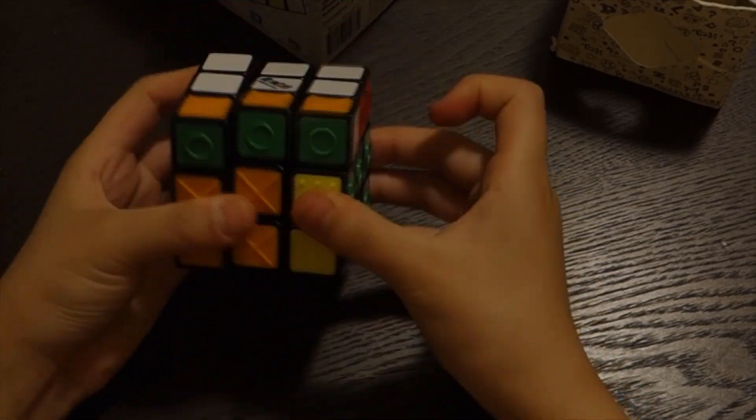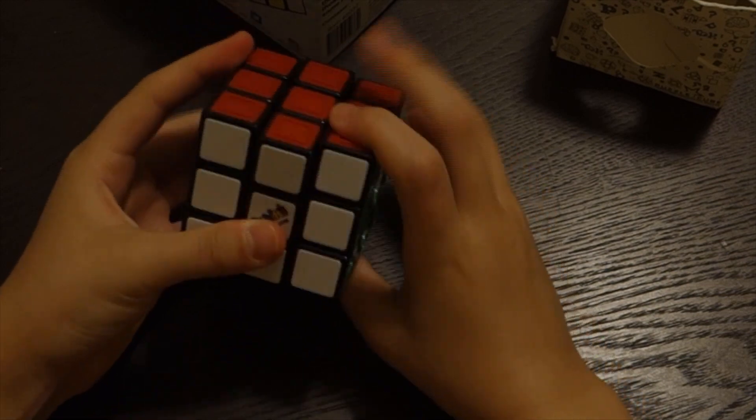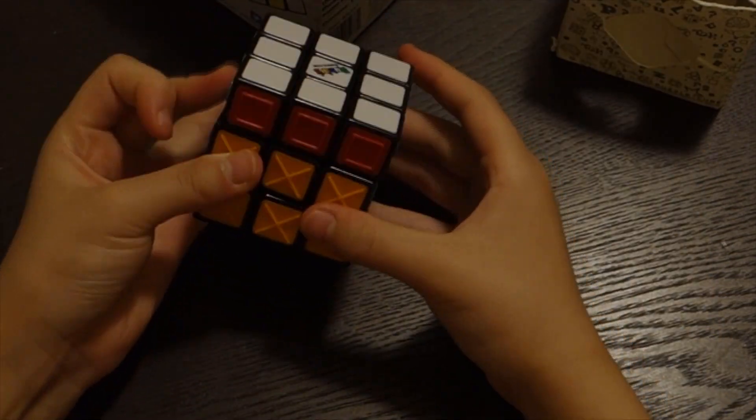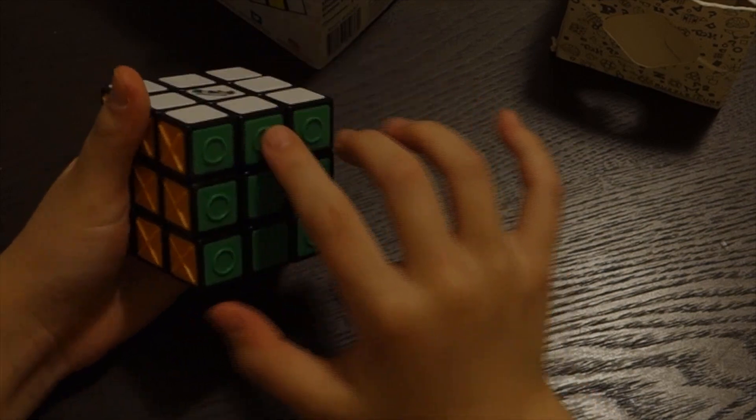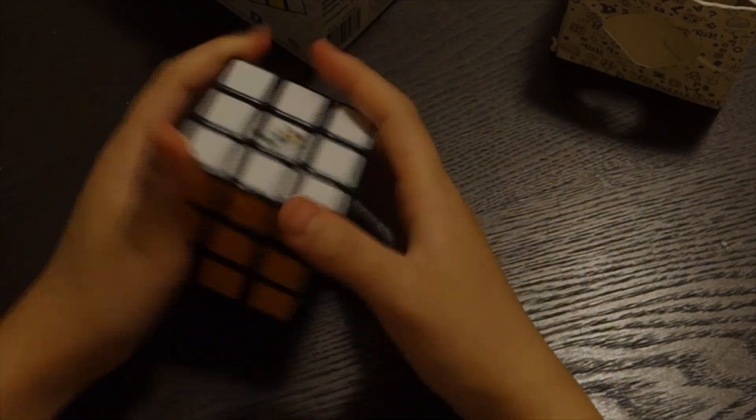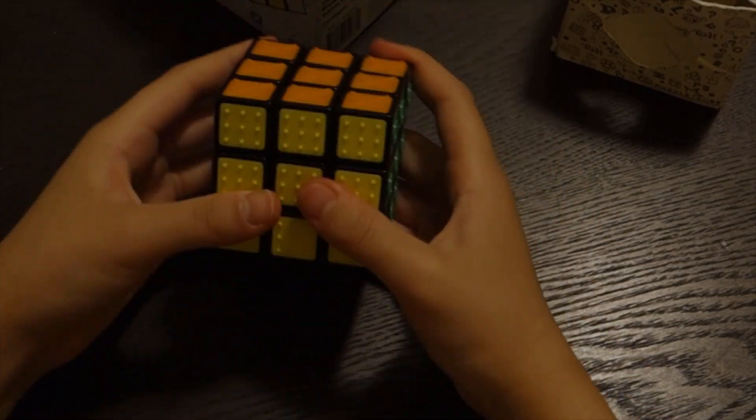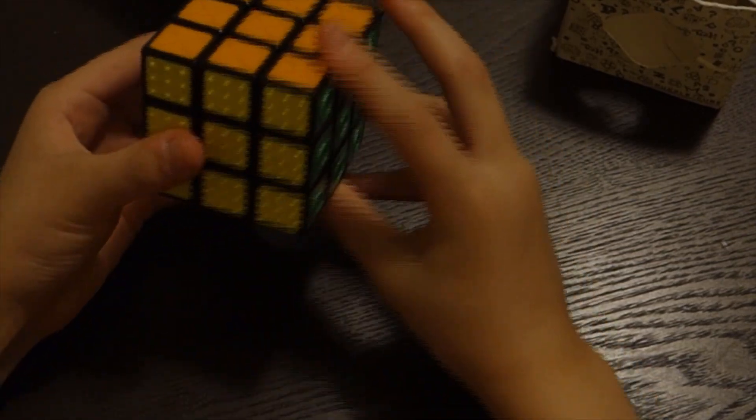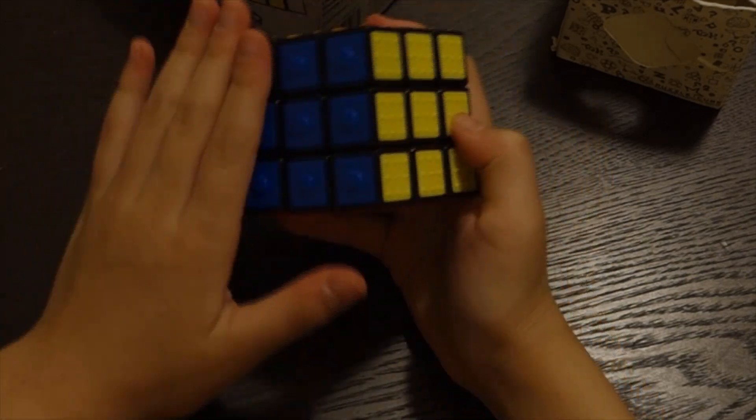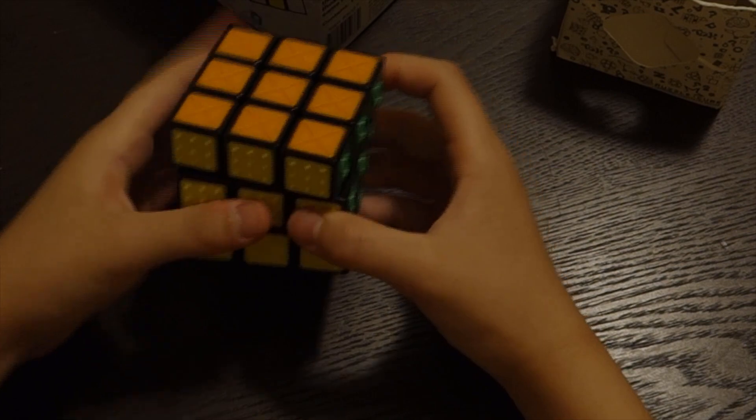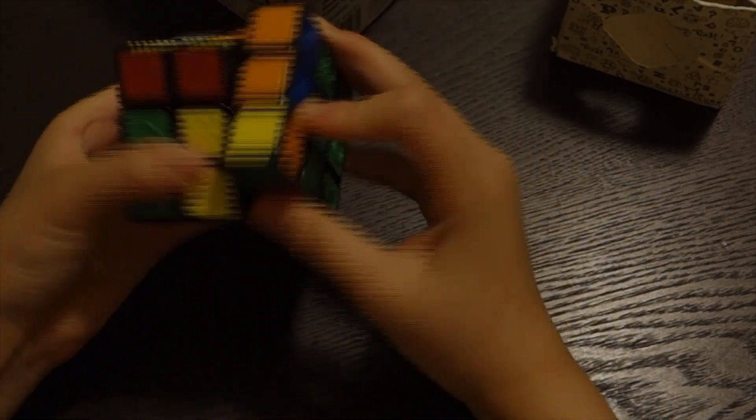Basically, this is a Rubik's tactile cube. You may be wondering what is that. So basically it has these little textures on it and you can just feel around, so you don't actually need the color to solve it. But I do assume that if you were to do it blindfolded, it would take quite a lot more brain power to try to solve it.